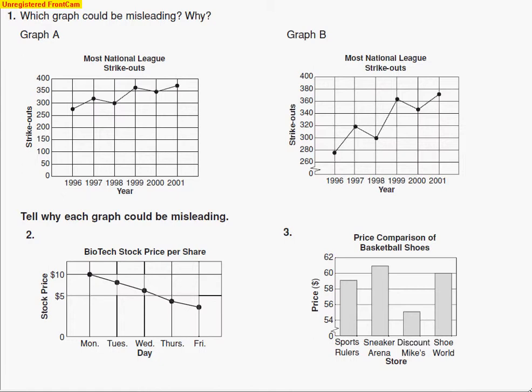So let's take a look at our two different graphs here, graph A and graph B. Looking at this first one, the first thing I always look for to determine whether it's misleading or not is to see if the units or these intervals, which is the distance between the numbers that we have on this axis, are different.